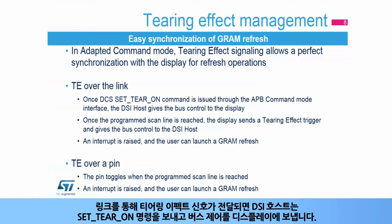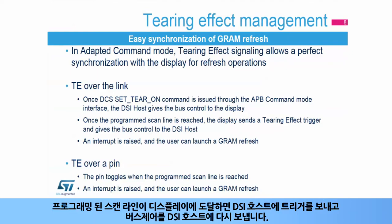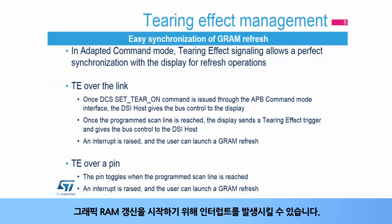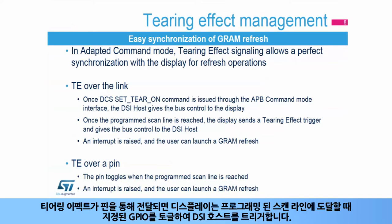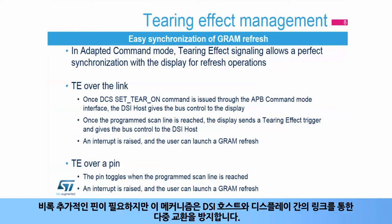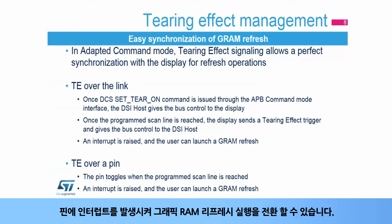When the tearing effect is signaled over the link, the DSI host sends a set-tear-on command and gives control of the bus to the display. Once the programmed scanline is reached by the display, it sends a trigger to the DSI host and gives control of the bus back to the DSI host. An interrupt can be raised to launch the graphics RAM refresh. When the tearing effect is signaled over a pin, the display toggles a dedicated GPIO to trigger the DSI host when the programmed scanline is reached. Although an additional pin is required, this mechanism avoids multiple exchanges over the link. An interrupt can be raised on the pin toggling to launch the graphics RAM refresh.